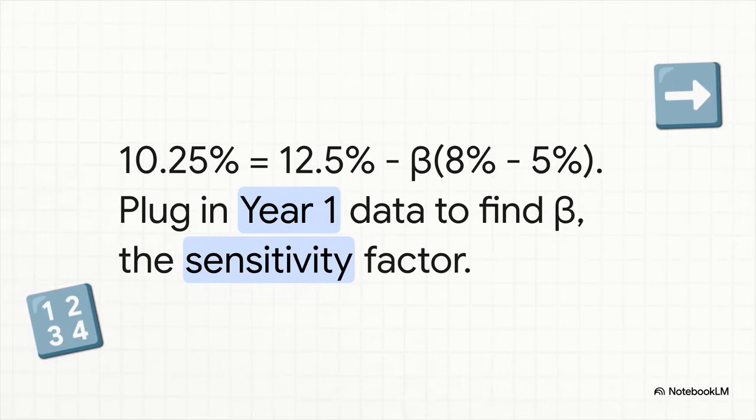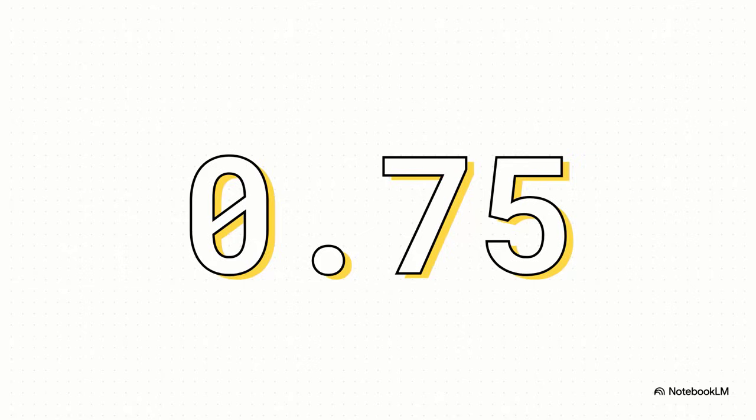So let's just plug our numbers from year one right into this thing. Actual inflation is 10.25%, expected inflation was 12.5%, and the unemployment gap? That's just 8% minus 5%. See? The only thing we don't know is beta. And boom. After a little bit of quick math, we find out that beta is 0.75. This is our sensitivity factor. I like to think of it as the secret recipe for the trade-off in this specific economy. And now that we've found it, we can really start to figure things out.